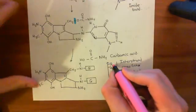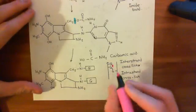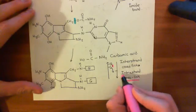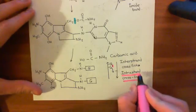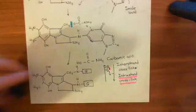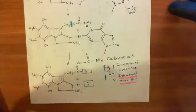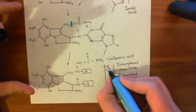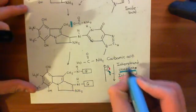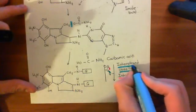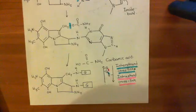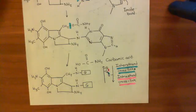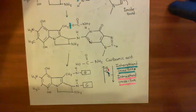So in pink, this would be an intrastrand crosslink, and this other one in blue would be an interstrand crosslink. And we'll discuss the effects of these intrastrand crosslinks and interstrand crosslinks on the cell in the next video.